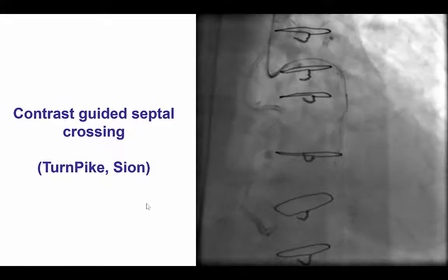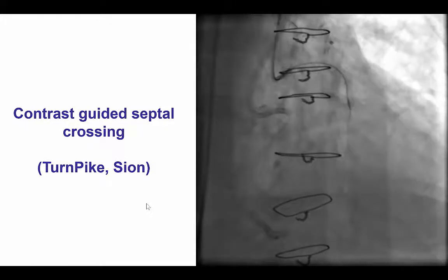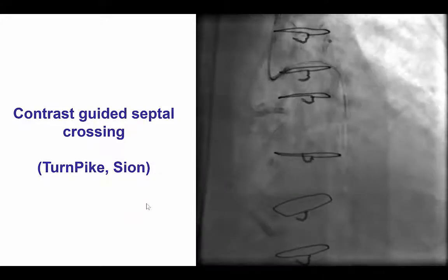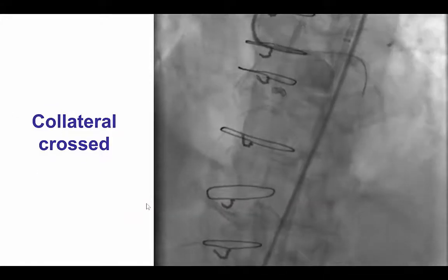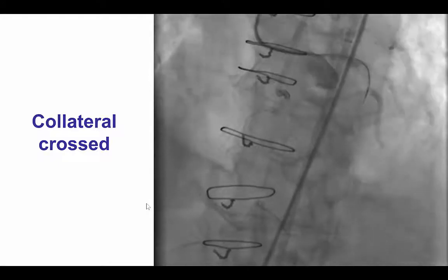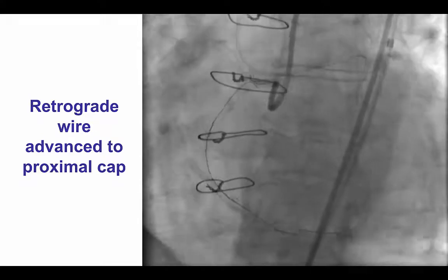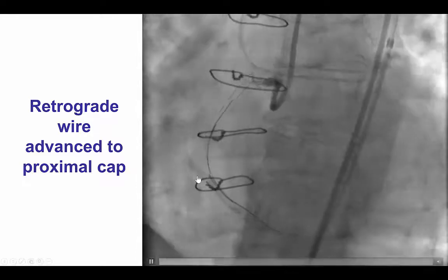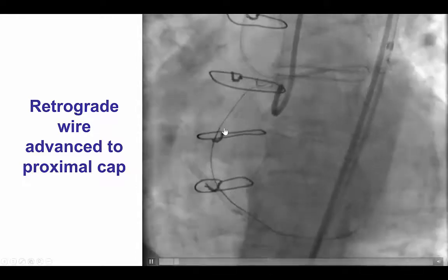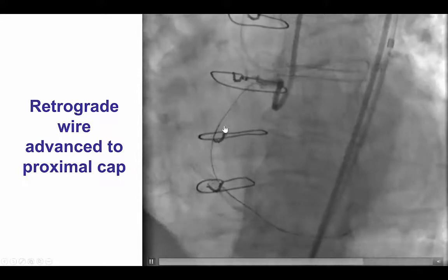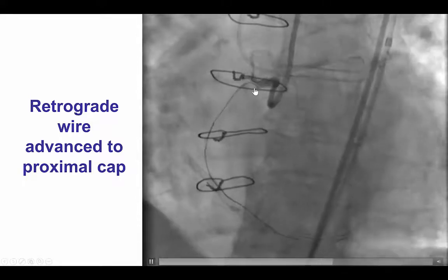We then switched to retrograde crossing. Surfing was not successful and we performed a contrast-guided crossing, and by doing that we were able to wire into the right posterior descending artery using a Sion guide wire. This was confirmed with contralateral injection. After advancing the microcatheter all the way to the PDA and the right coronary artery, we were able fairly quickly to advance the retrograde guide wire all the way to the proximal cap.